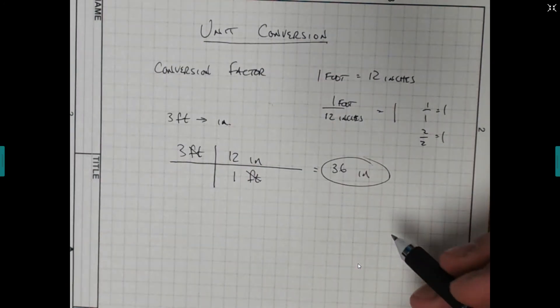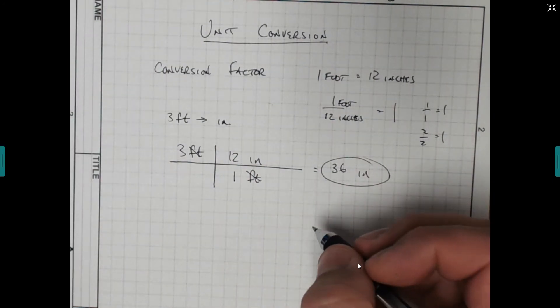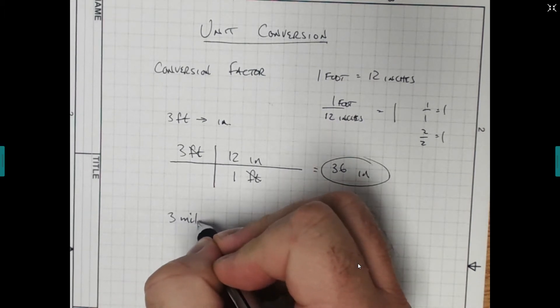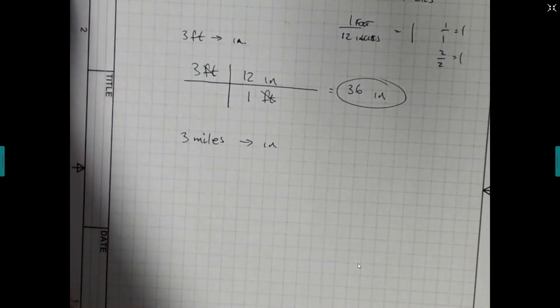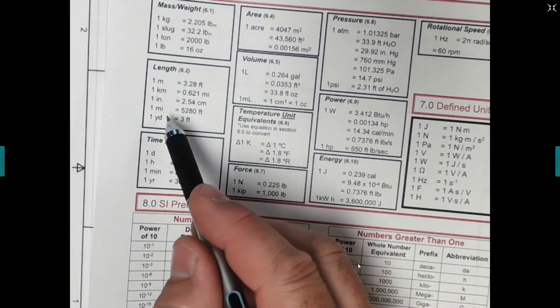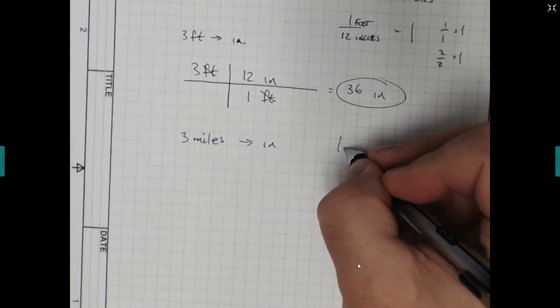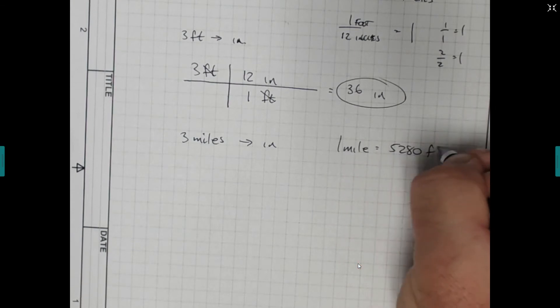Now sometimes maybe it's more than one step. Maybe we want to convert miles. So we have 3 miles and we want to convert that into inches. How many inches are in 3 miles? Well, if we look at our thing here, we know that in 1 mile, there's 5,280 feet. In 1 mile, 5,280 feet.